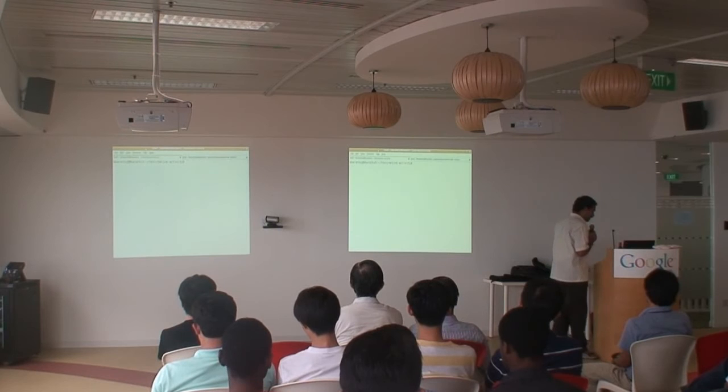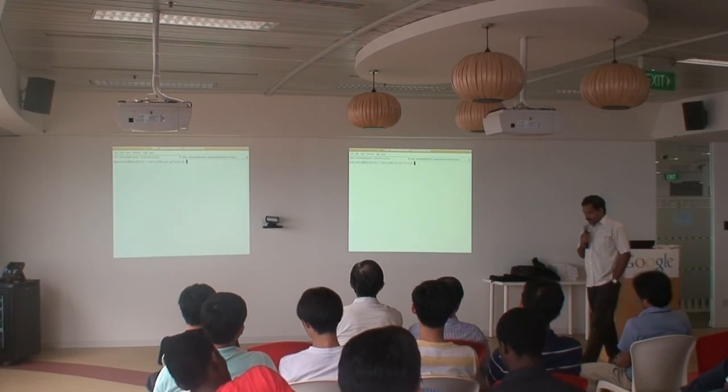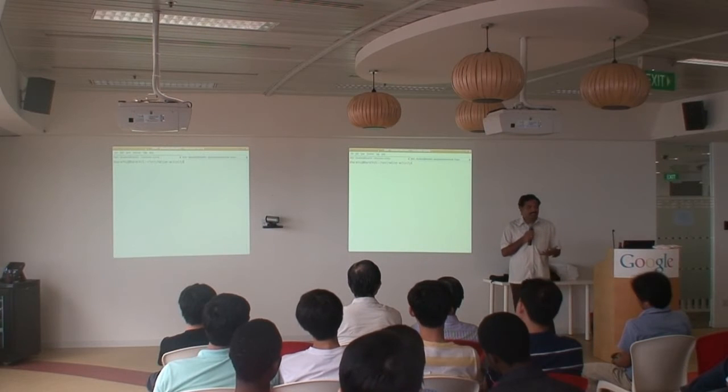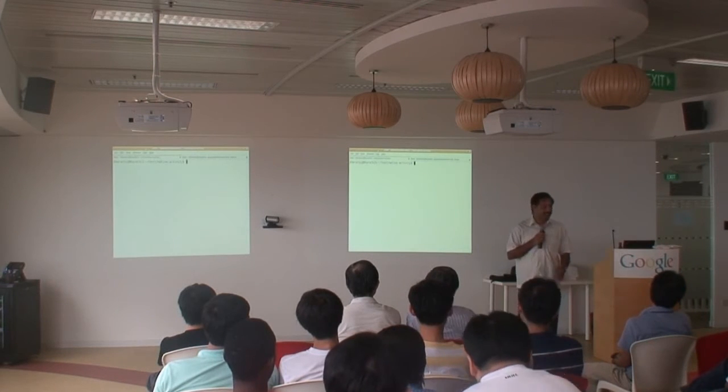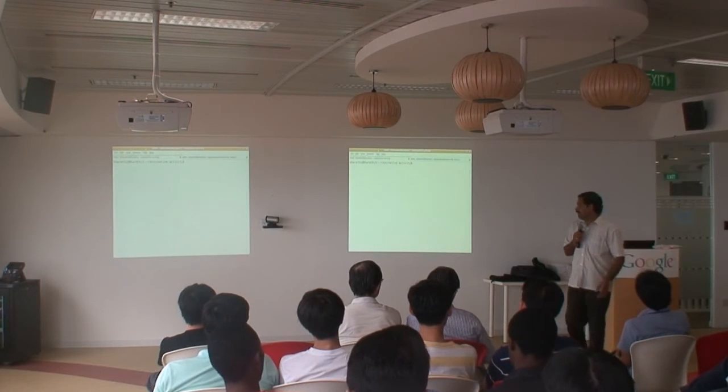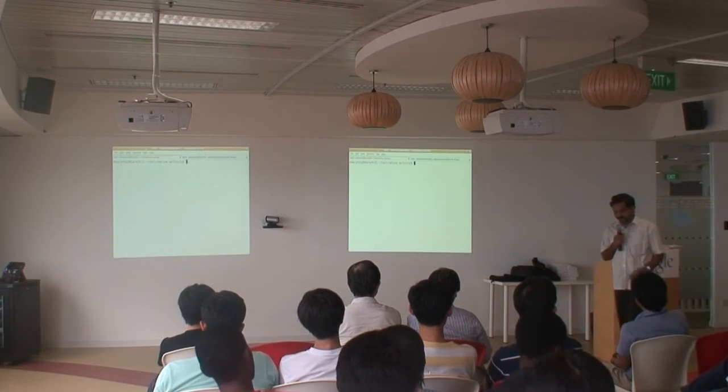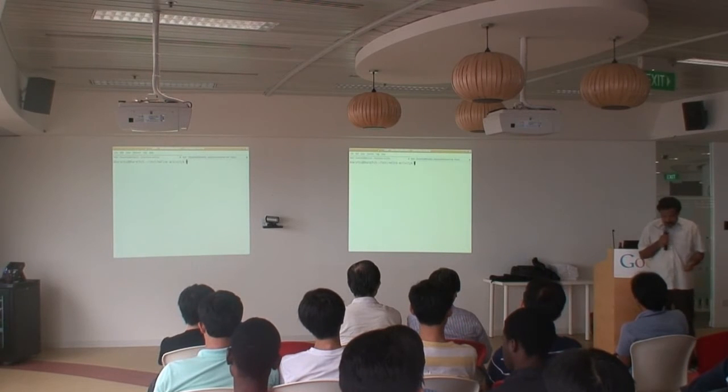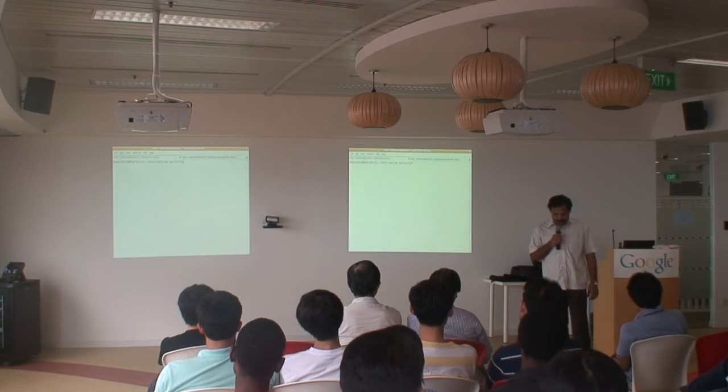Now in 2.3, they extended the NDK's support. In the 2.2, you cannot write an entire application in the native languages. Native languages are basically the C and C++. You can write only a part of your programming in the C++. So they utilized the JNI feature till 2.2.